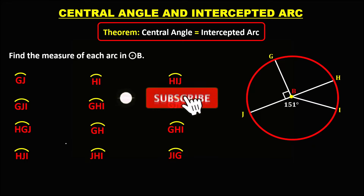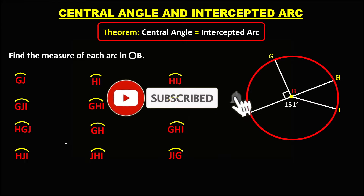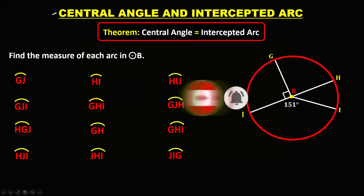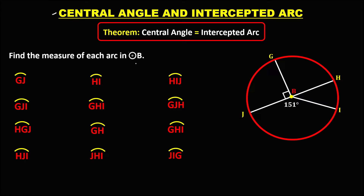Let's solve this problem about the central angle and the intercepted arc. The theorem states that the central angle is equal to the intercepted arc. For this given circle B, we first need to find all the angles and all the measures of the arcs.